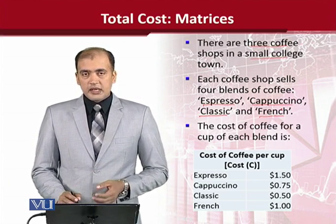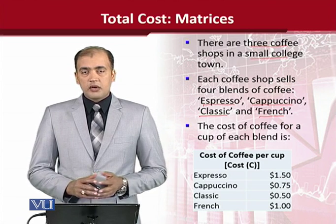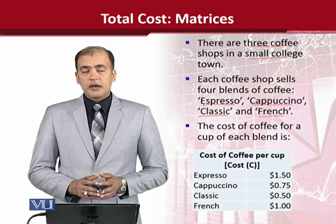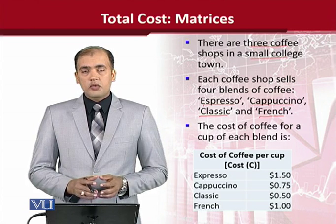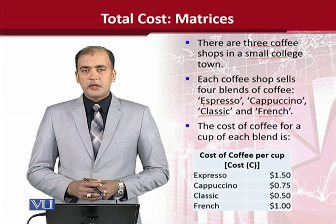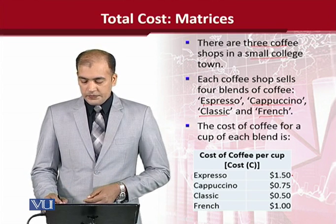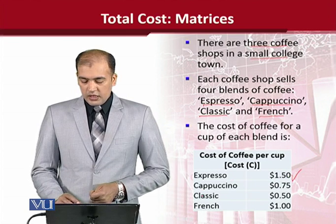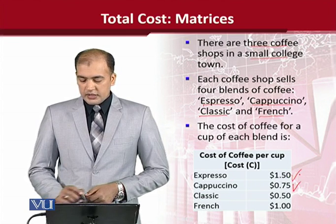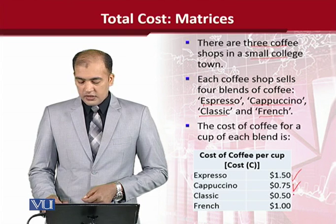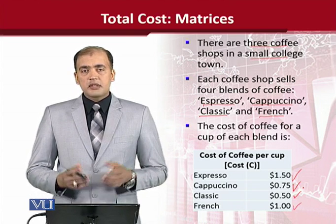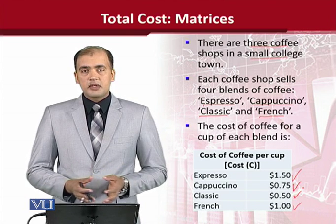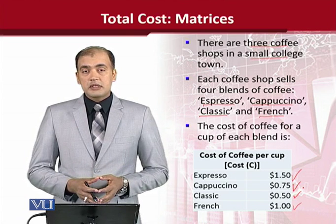And the cost is also available. The cost is the expenditure done by the producer, the coffee seller, how many rupees or dollars they have to spend to make it. So you are seeing that the espresso is $1.50, the cappuccino is $0.75, and the classic and French costs are given. So this is one economic variable that we usually know and use, which is known as the cost.